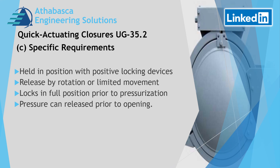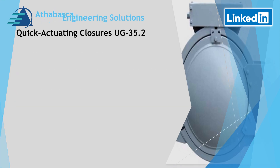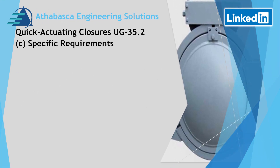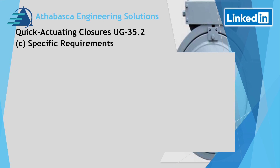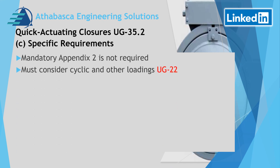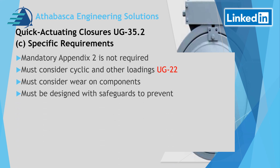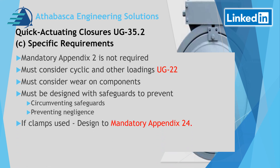The pressure can be released prior to opening. Part C — specific requirements: Mandatory Appendix 2 is not a requirement for this design. One must consider cyclic and other loadings as defined in UG22, as well as wear on the components. The design must include safeguards to prevent circumventing safety devices and prevent negligence. If clamps are used, then Mandatory Appendix 24 is required.